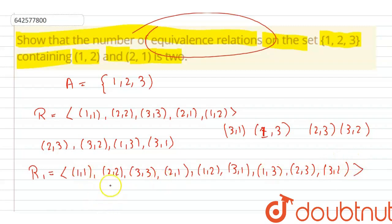And we can see there are only two equivalence relations having (1, 2) and (2, 1). Thank you.